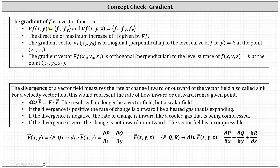We find the gradient of a function f and the result is a vector field. One of the important properties of the gradient of f is that the direction of maximum increase of the function f is given by the gradient of f. A two-dimensional gradient vector is orthogonal to the level curve of f(x,y)=k at a given point, and a three-dimensional gradient vector is orthogonal to the level surface of f(x,y,z)=k at a given point. So again, we find the gradient of a function f and the result is a vector field.